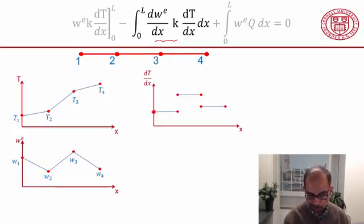For instance, if I want to know what is this value, the derivative over here, it's just going to be this value minus this value divided by the length of the element. So that value is going to be t2 minus t1 divided by delta x, correspondingly for this element and so on.